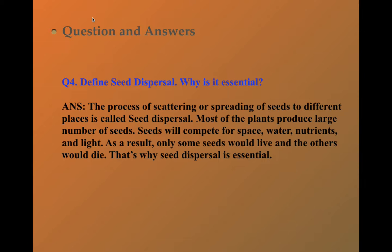The answer is the process of scattering or spreading of seeds to different places is called seed dispersal. Most of the plants produce large number of seeds. Seeds will compete for space, water, nutrients and light. As a result, only some seeds would live and others would die. That's why seed dispersal is essential.